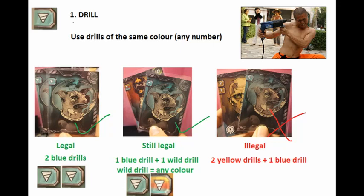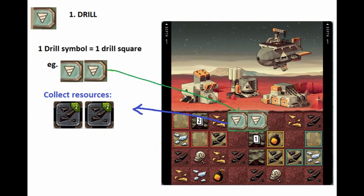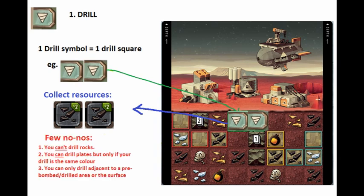To drill, you use cards of the same colour and count the drill symbols that you used in total. This will net you a drill action in a single orthogonal direction, the size of the total drill symbols you used.